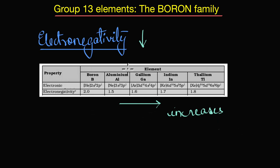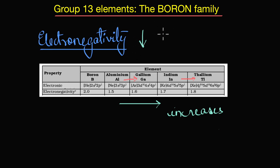Almost all of the variations in these properties occur as we move from aluminium to gallium and from indium to thallium, all attributable to the poor shielding effect of the d and f orbitals. In the next video, we will look at chemical properties and the trends in reactivity of group 13 elements, and explore whether the poor screening effect of d and f electrons also affects chemical reactivity.